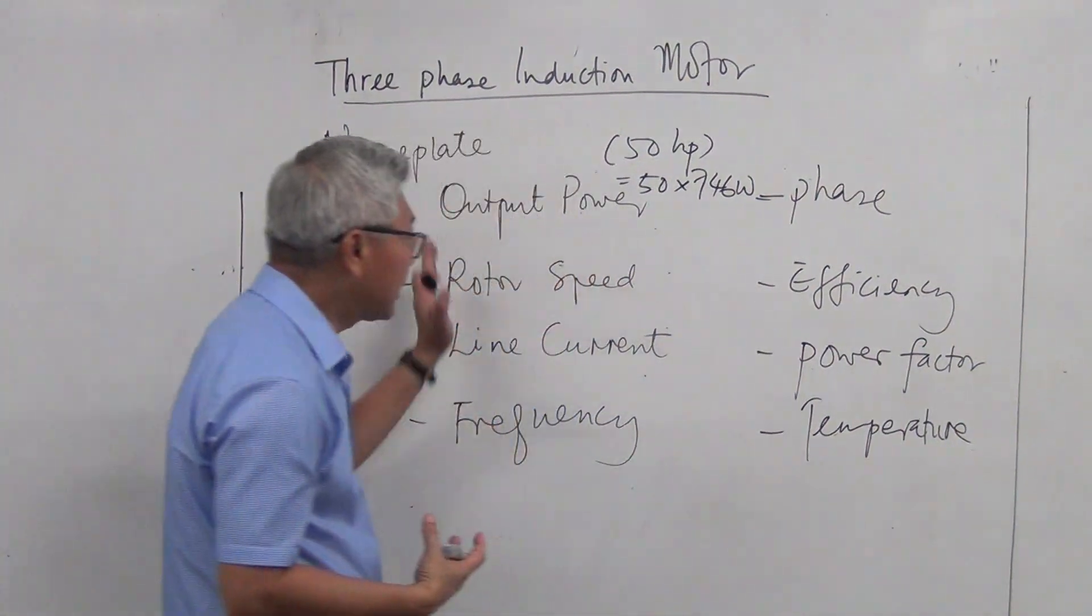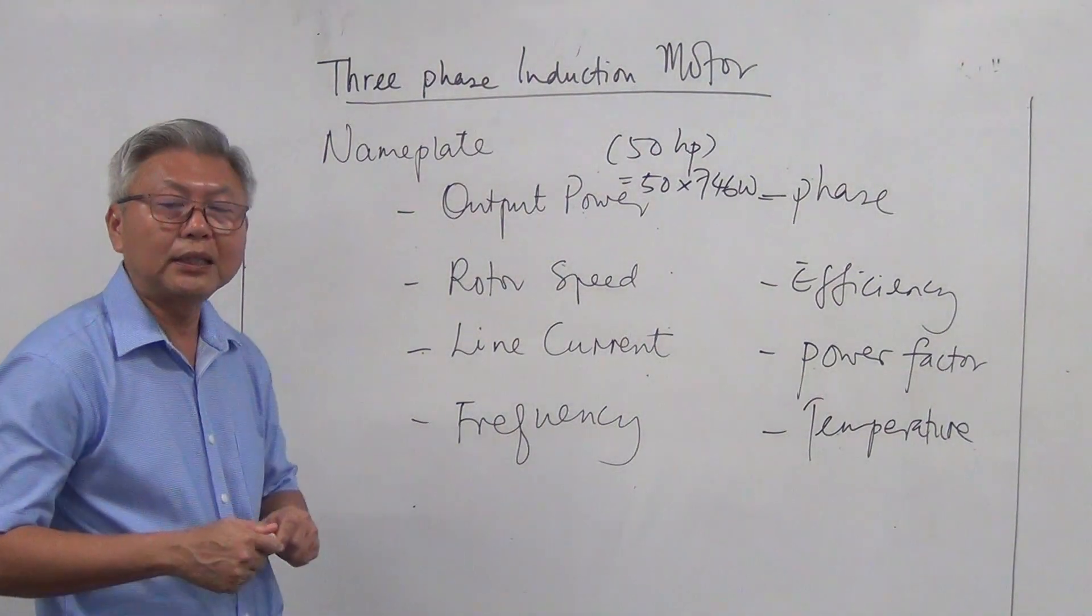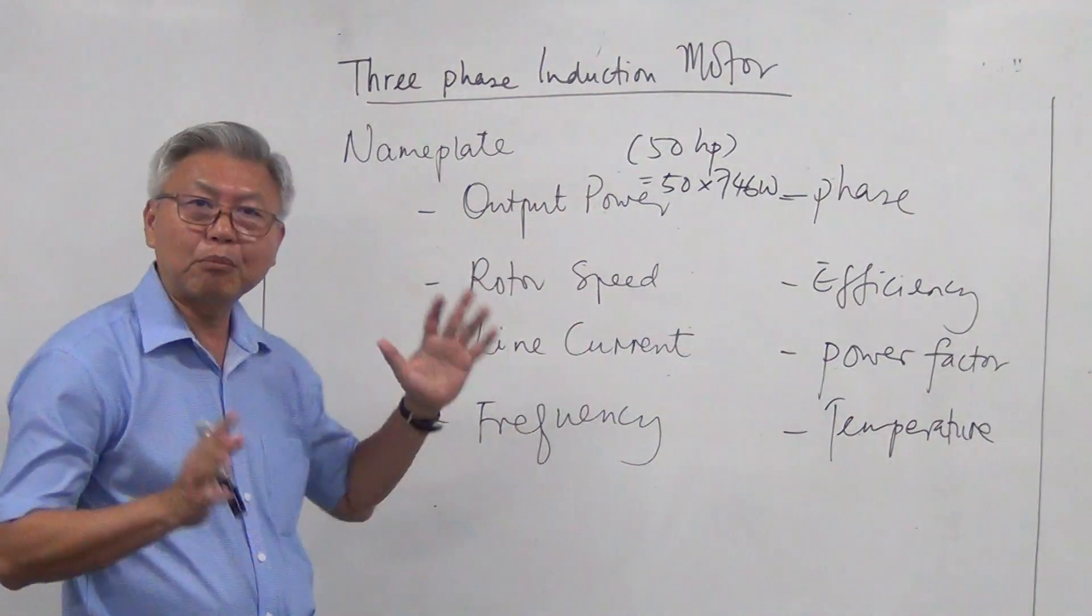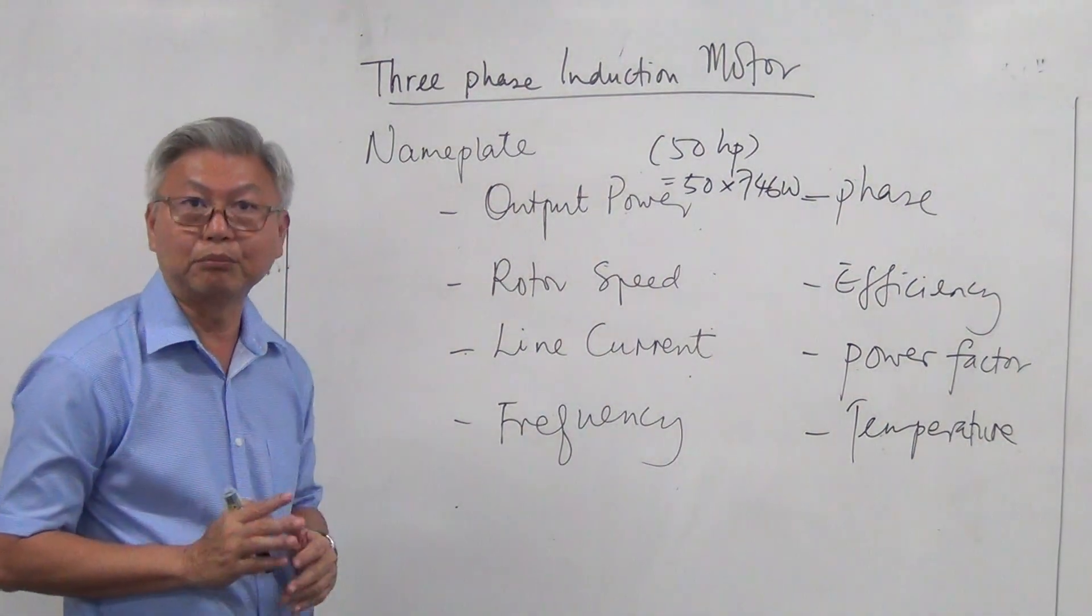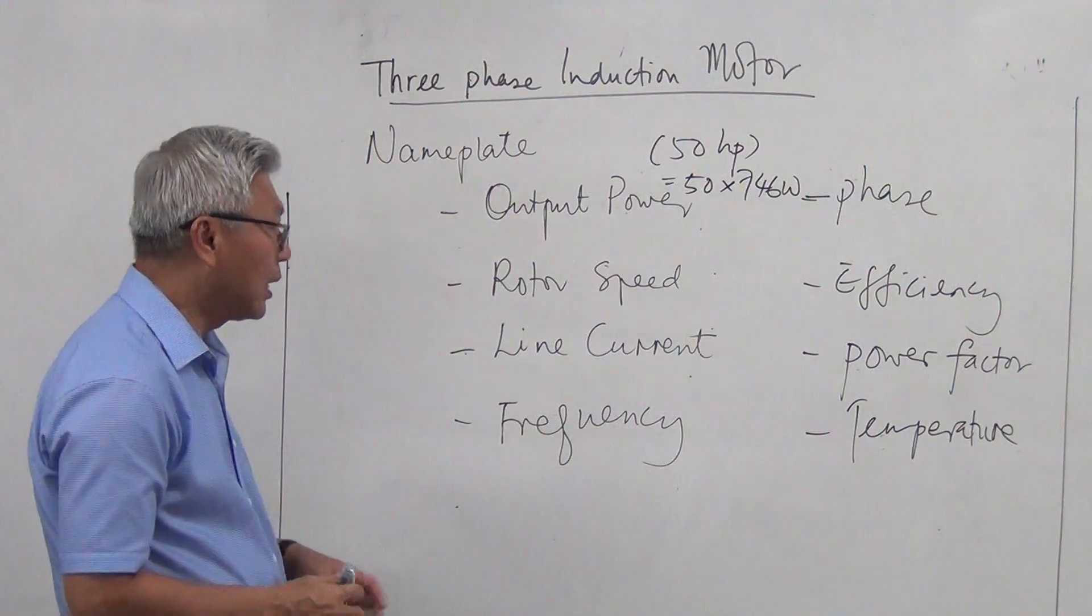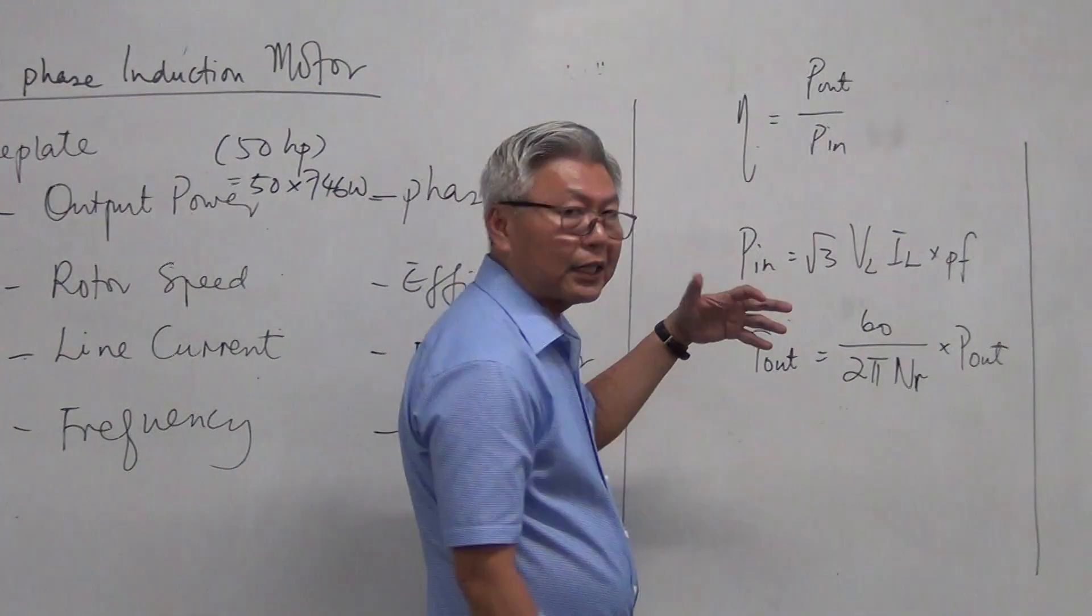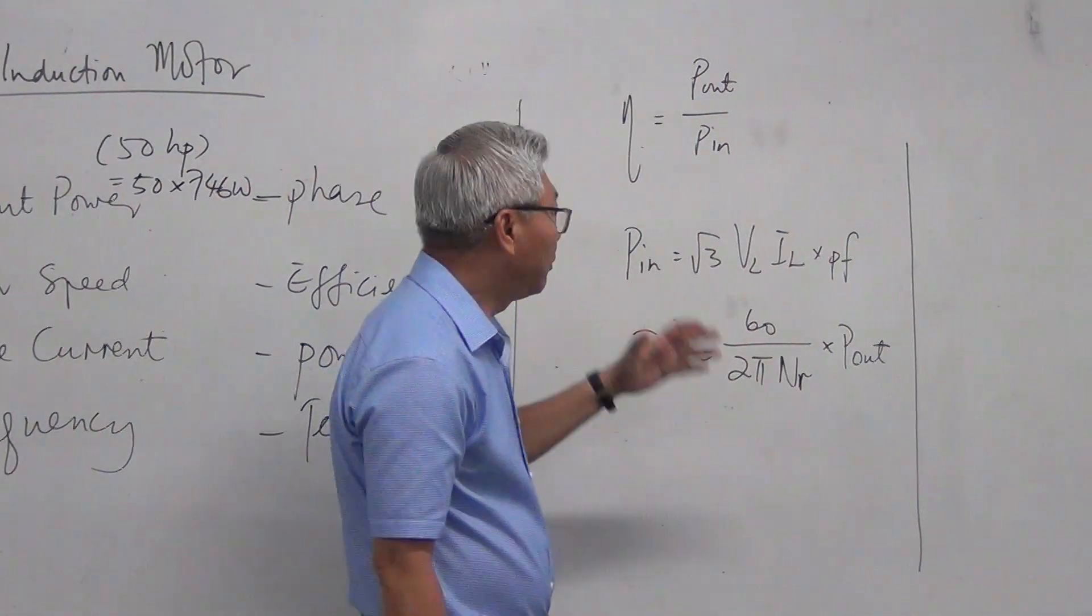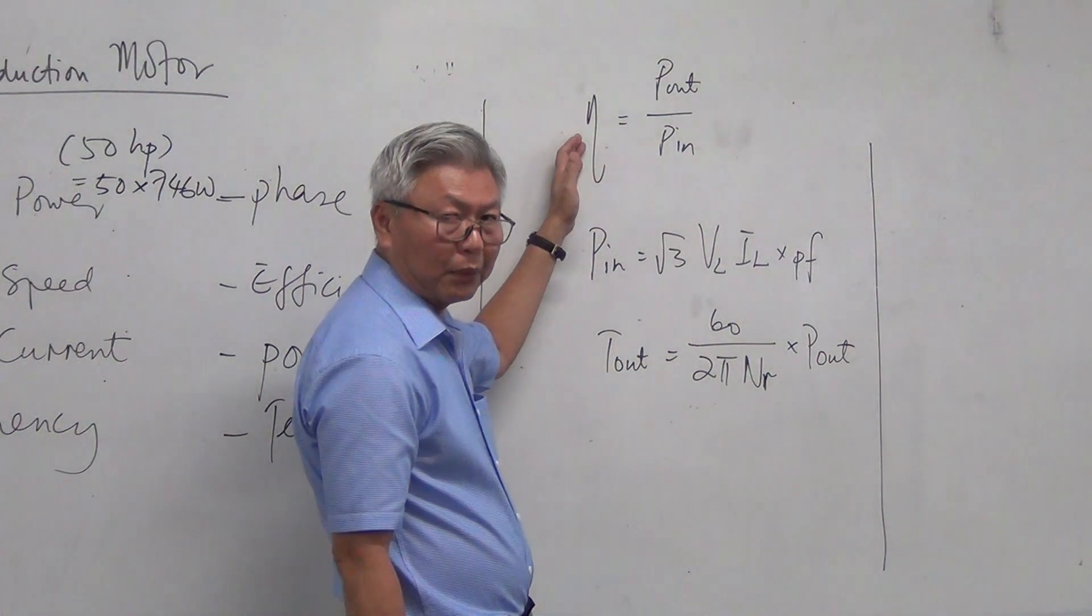Now, nameplate gives you the maximum condition. So if you were to run your motor under the nameplate information, you're actually making it run under the rated condition, everything is maximum. So that's what is useful about the nameplate information. Now, when we do a simple example involving calculation of line current, things like that, before we do that,